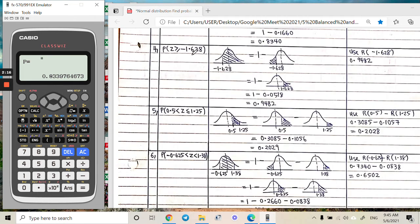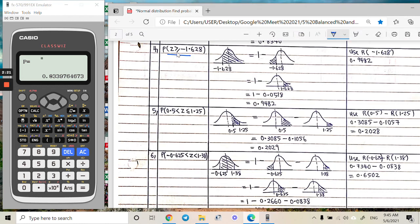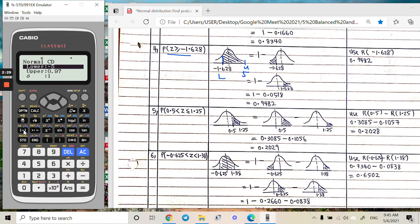Question 4: after I draw this question, I have negative like this. This one is lower limit, so upper limit I put 5. I'll key in negative 1.62, and then upper limit I put 5. You get 0.9 something.